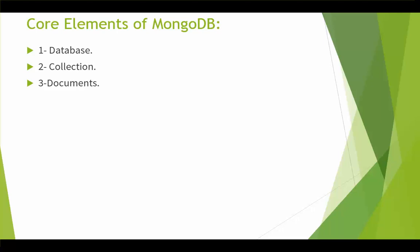Thirdly, documents. This is the most basic unit of data in MongoDB. Basically, it's composed of a set of key-value pairs. Unlike the database record, documents have dynamic schema, which means documents that are part of the same collection don't need to have the same set of fields. Document is the heart of MongoDB — an ordered set of keys which are associated to values. The representation of a document varies by programming language, but most languages have a data structure that is a natural fit, such as hash, map, or dictionary in BSON.